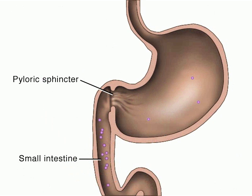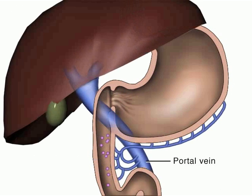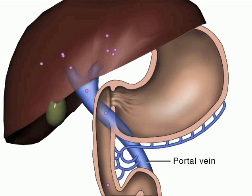Alkaline drugs, which cannot be absorbed in the acidic stomach, pass through the pyloric sphincter into the first part of the small intestine and are absorbed there.